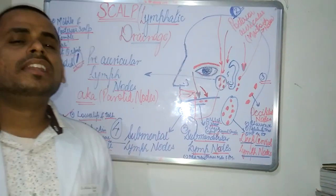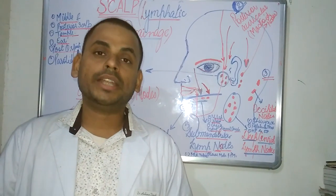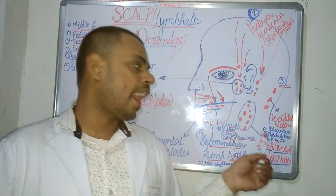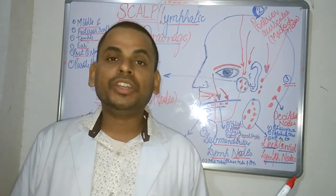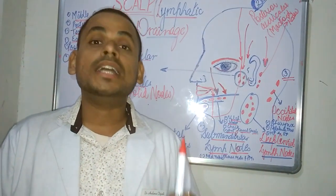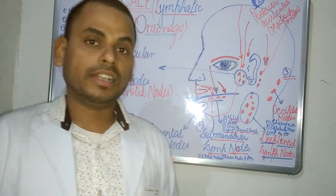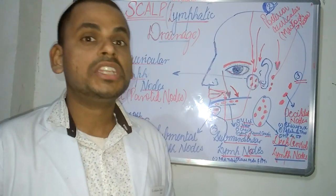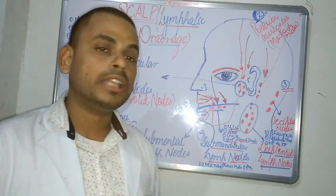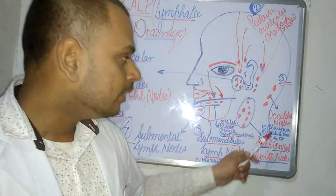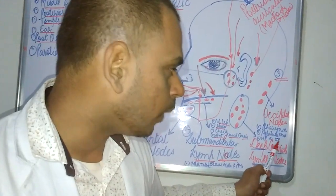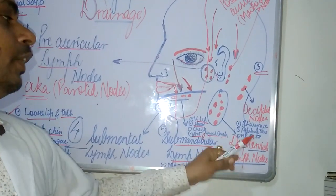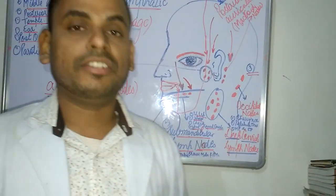The deep cervical lymph nodes are situated in the cervical region of the neck. They have a counterpart: the superficial cervical lymph nodes. The regions draining into the deep cervical lymph nodes include the pharynx, the palatine tonsil, the hard palate, and the soft palate.